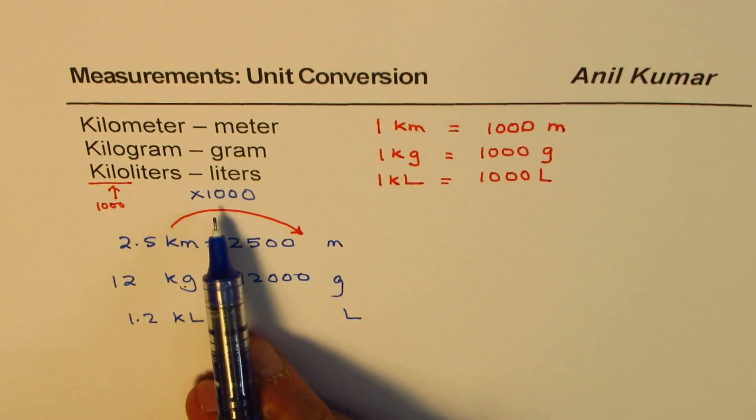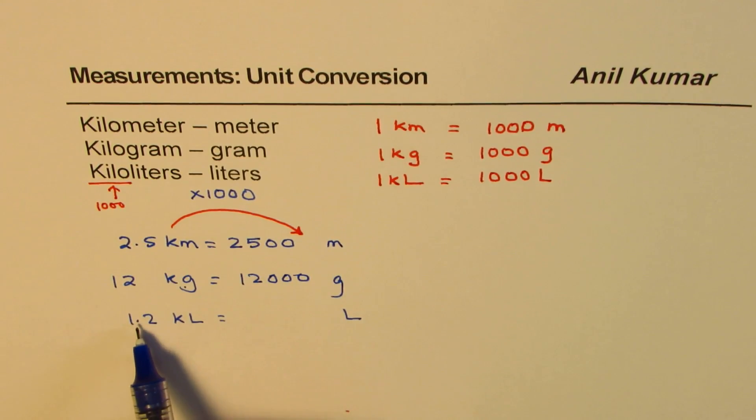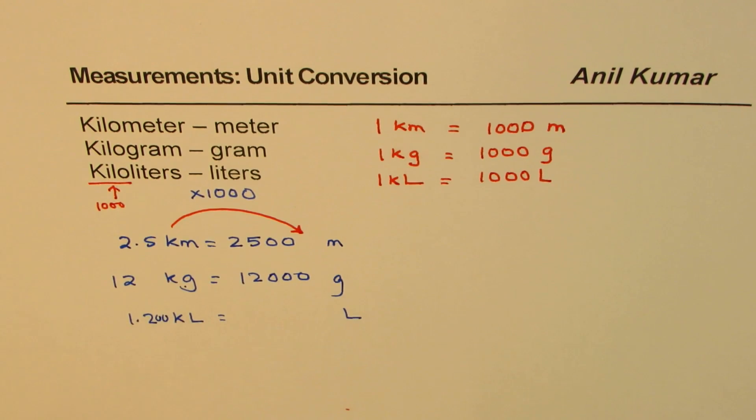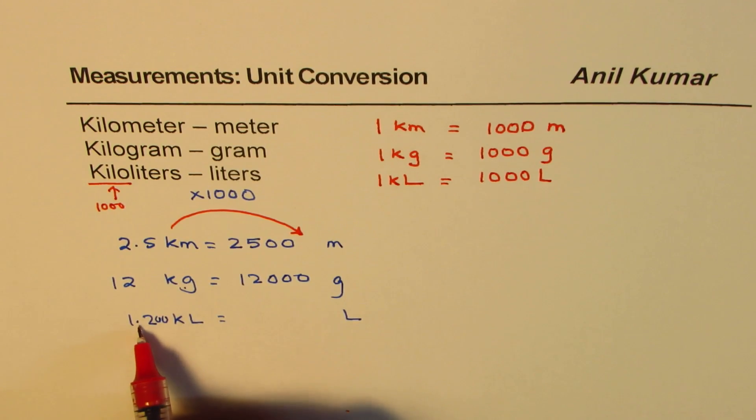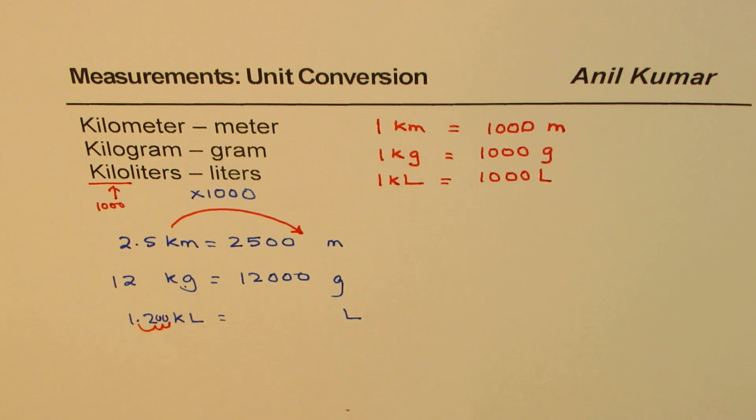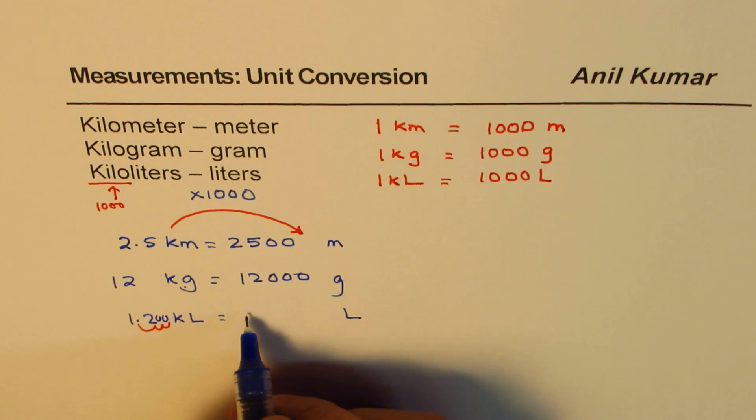Now, multiplication by thousand is simple. Move the decimal three places, right? So that is to say, if I move, let's write down here, let's think like this as we have zeros here after this. Let's have some zeros here. So that is same as 1.2. Multiplying by thousand means move this three places, 1, 2, and 3.